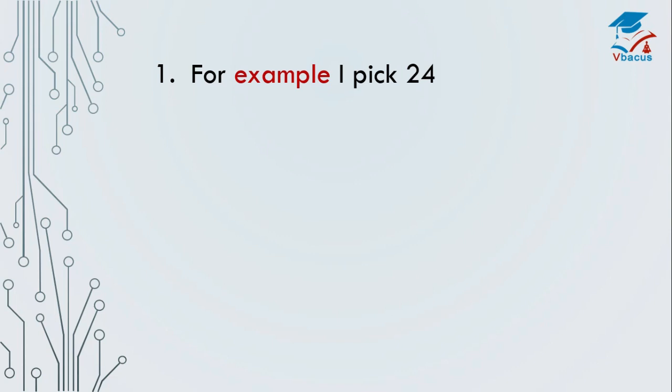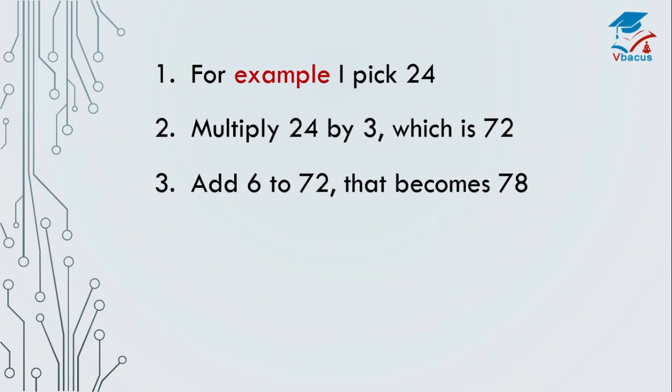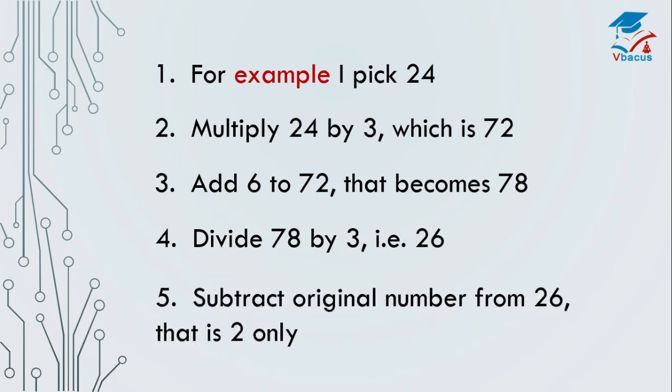For example, I pick 24. Multiply 24 by 3 which is 72. Add 6 to 72. That becomes 78. Divide 78 by 3. That is 26. Subtract the original number from 26. That is 2 only.